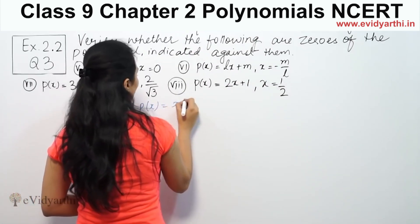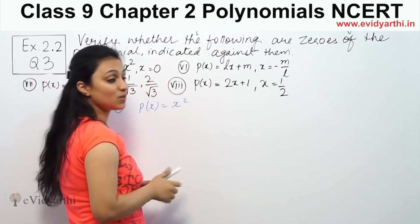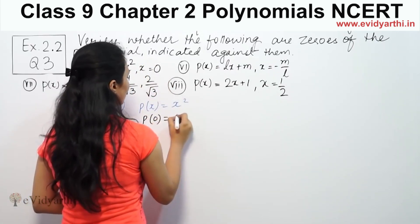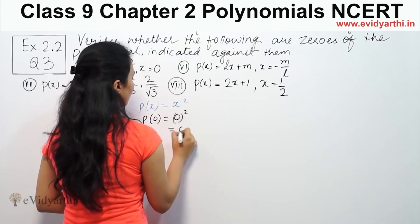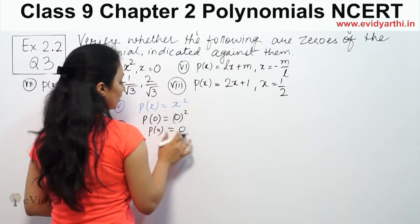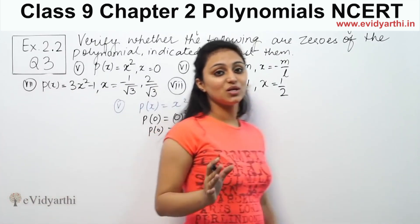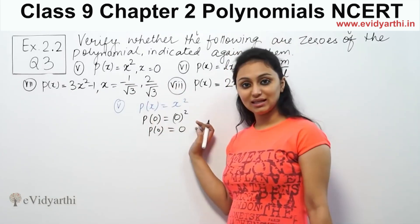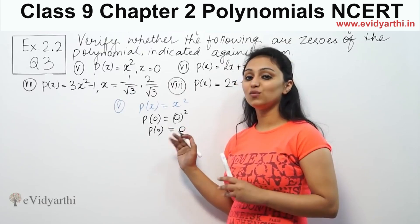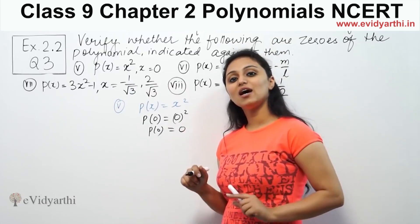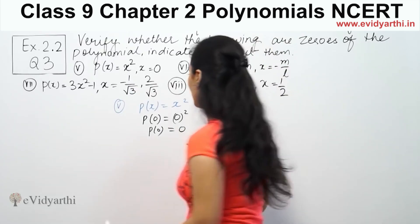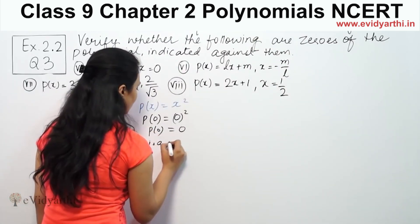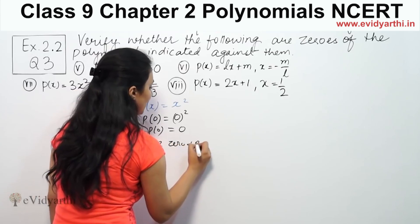The first part: p(x) is given as x squared. We need to check if x equal to zero is a zero. If x is zero, then p(0) will be zero. As I told you in the last video, to check zeroes we substitute into the polynomial. Since the answer is zero, zero is a zero of p(x).